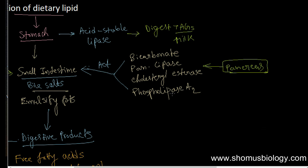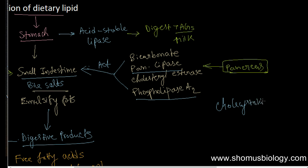The release of these components such as phospholipase A2 is regulated. Cholecystokinin stimulates the secretion of all the enzymes like pancreatic lipase and phospholipase A2, and cholecystokinin also regulates the activation of these enzymes.